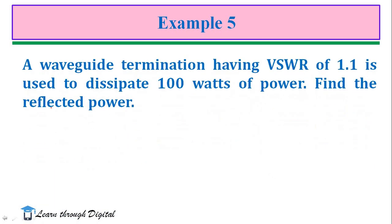Another example. Example 5 is a waveguide termination having VSWR of 1.1 is used to dissipate 100W of power. Find the reflected power.